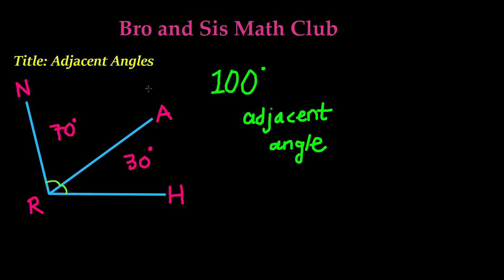In this case, we have 100 degrees adjacent angles. And we know these are adjacent angles because, first of all, they have a common vertex, which is the point R right over here.